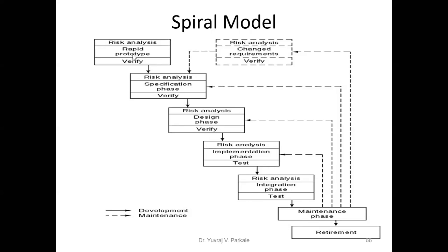In the waterfall model, you hand over the product to the client after all phases. In the rapid prototyping model, the prototype is handed over to the client at the first phase of the cycle. In spiral modeling, it follows a mix of both models — rapid prototype and waterfall — and accordingly you evaluate the performance of the product.